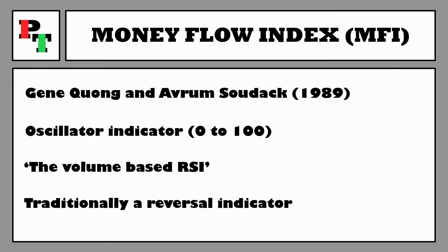As the Money Flow Index is modelled after the RSI, it will be no surprise that it is traditionally used as a reversal indicator. The MFI tries to figure out whether the momentum of price is too overstretched in either direction. If price is too overstretched according to the MFI, that suggests price will reverse, retrace, or at the very least stall. It doesn't always work out though — sometimes that trend just keeps on going.